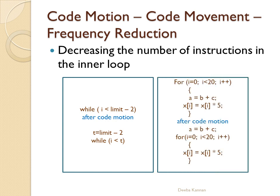Here is one more example of frequency reduction. Consider a for loop: for i = 0, i less than 20, i++. Inside the loop there are two statements: a = b + c, and x[i] = x[i] * 5. The statement x[i] = x[i] * 5 depends on i, but a = b + c — the result of a is not used anywhere inside the loop, and b and c are constant values. So we can move a = b + c outside the for loop. Instead of executing it 20 times with the same result, we execute it only once outside. This is loop optimization using the frequency reduction technique.